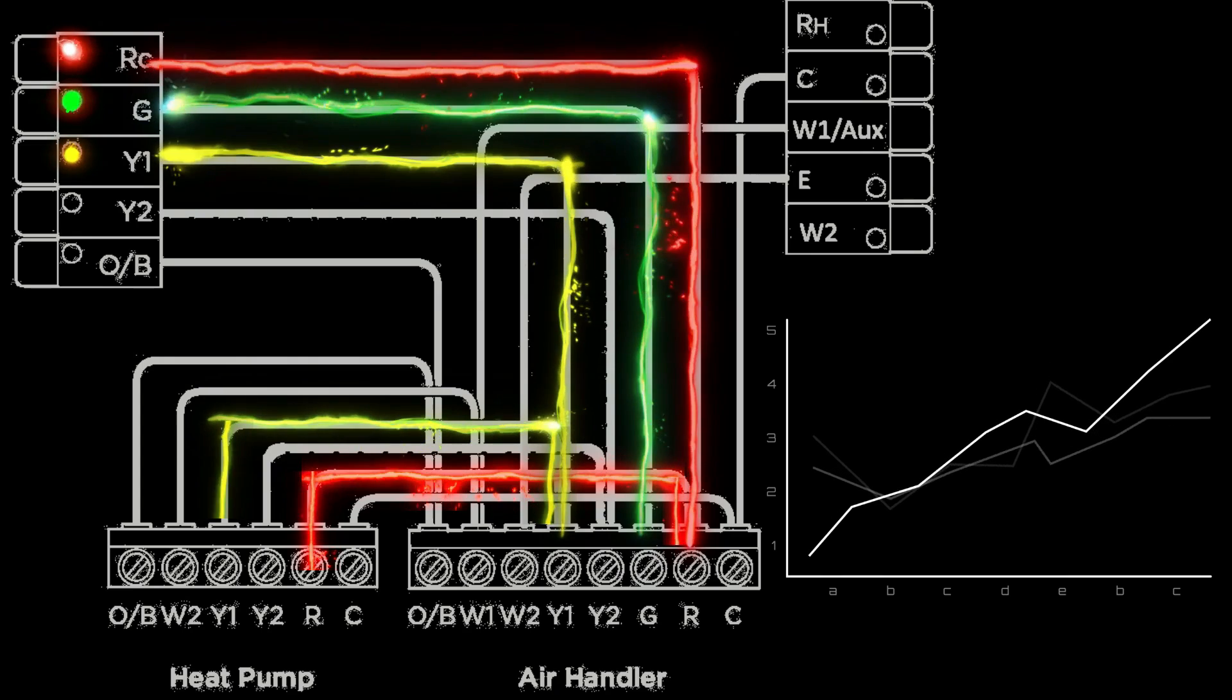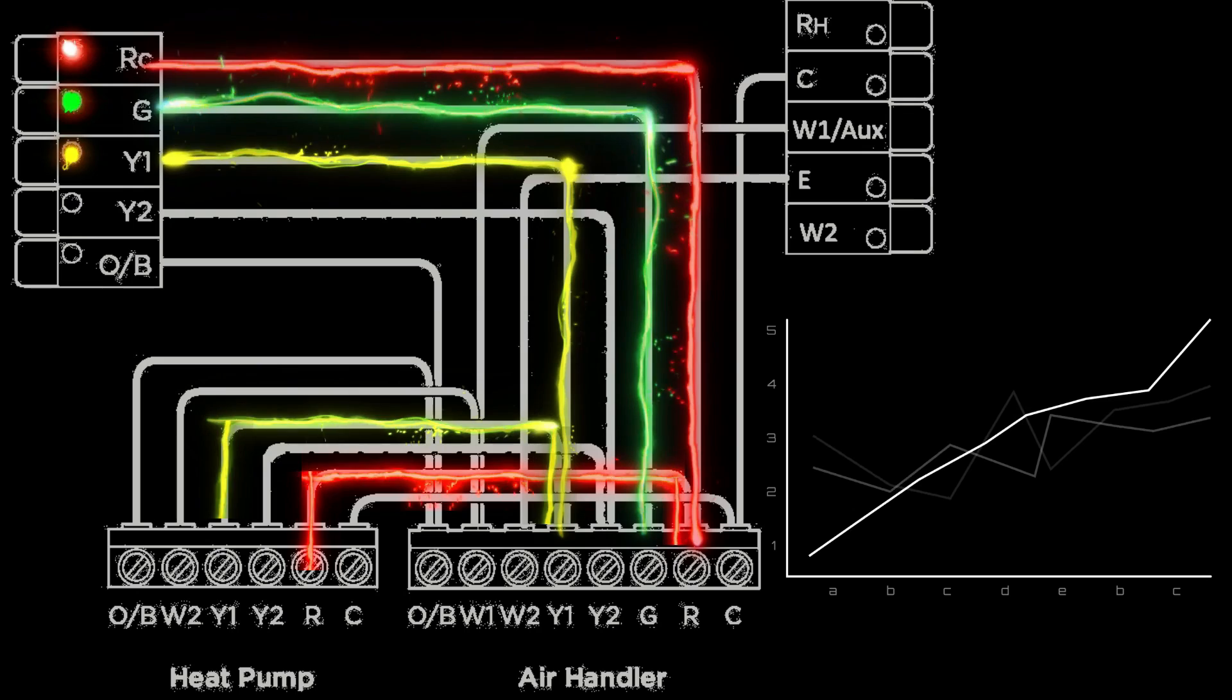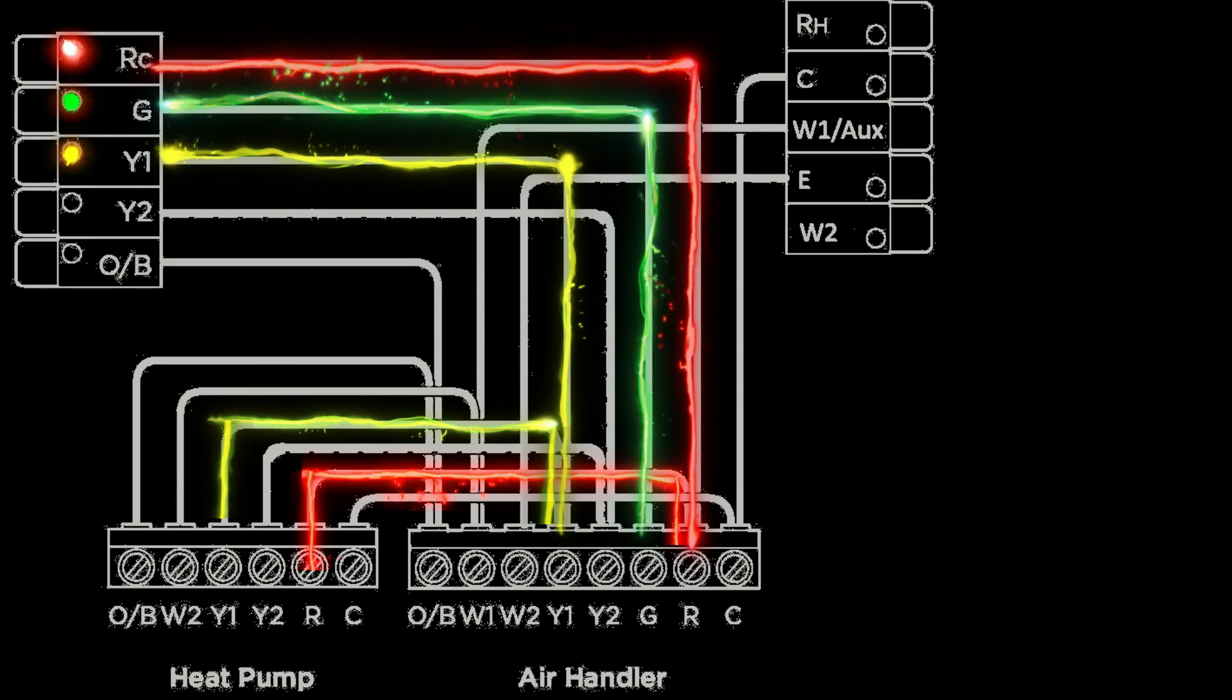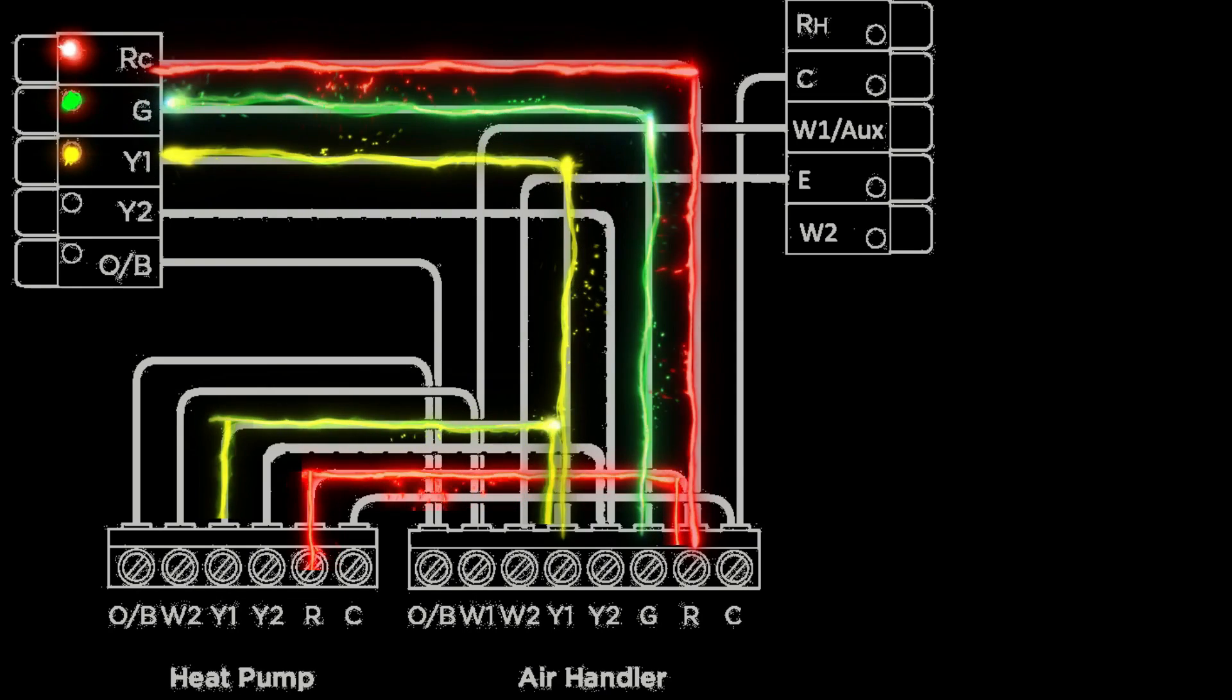Now if that temperature starts to drop out of that one degree differential it will start plotting that and looking for a pattern. As the temperature continues to drop outside of that one degree differential, the more it does that, the sooner the thermostat will start kicking in second stage.